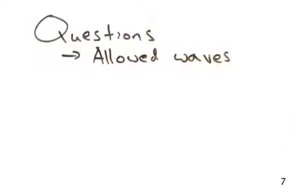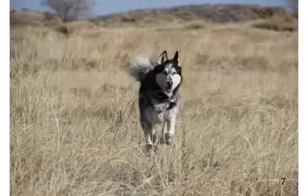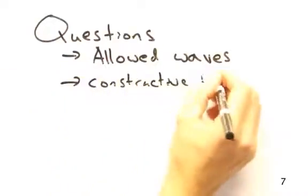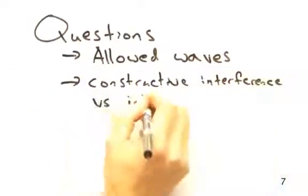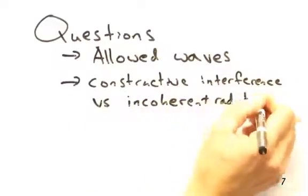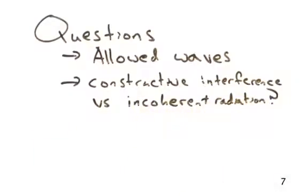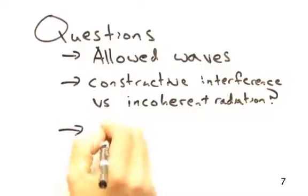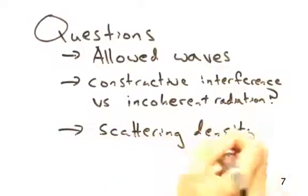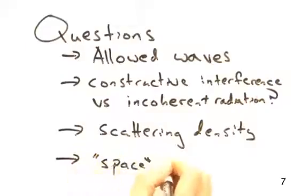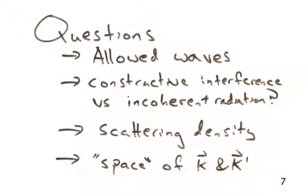So let's end this screencast with some questions regarding the physical interpretation. For instance, what sort of allowed waves can be used for the source? I mean, can I just throw puppies at our sample? Second, our radiation source typically produces incoherent radiation. So how does that work? Third, can an inverse Fourier transform give us back our scattering density? And finally, what space do our k vectors exist in? Until next time on Solid State Physics in a Nutshell, NJ signing out.